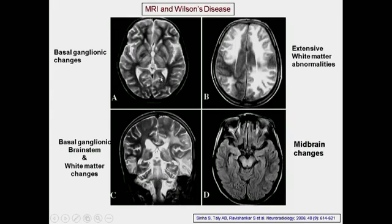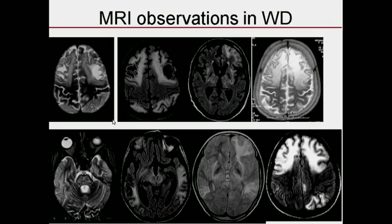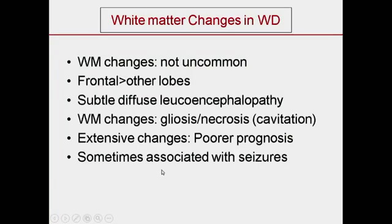You can see more florid basal ganglia changes in the thalamus, putamen, pallidum, and white matter. Conventionally Wilson's was thought of as a deep grey matter disease, but we find a substantial proportion has white matter disease. This is in the midbrain tectal region. These white matter changes sometimes become gliotic and patients may have seizures. They are more in frontal than other lobes, and extensive white matter changes may suggest poor prognosis.